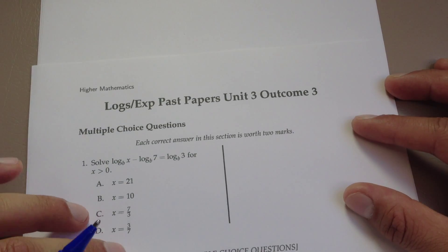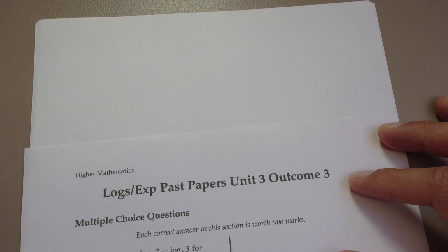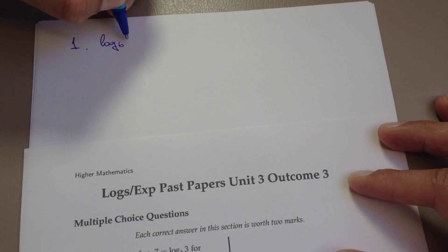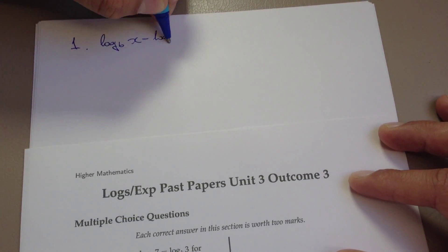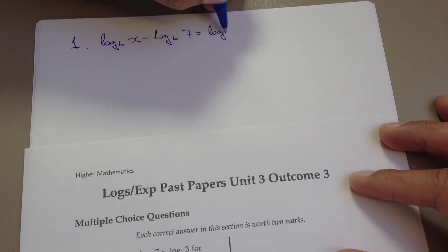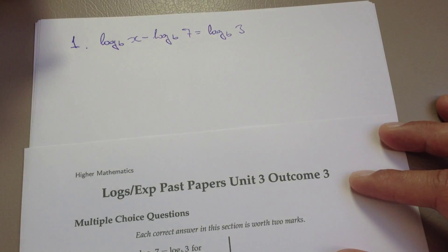So how would we go ahead and approach this? Well, to begin with, let's write down the question itself. So it's log to the base b of x take away log to the base b of 7 equals log to the base b of 3.